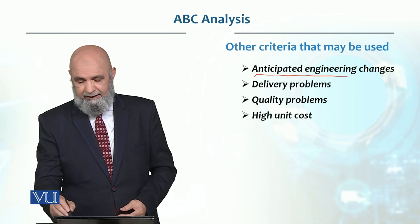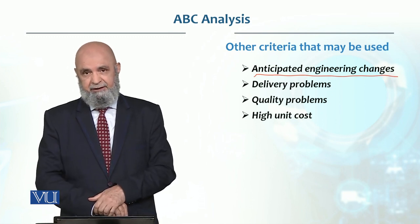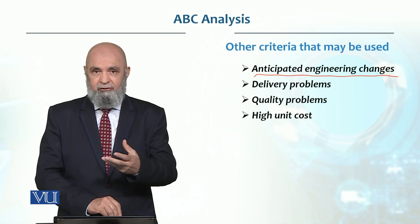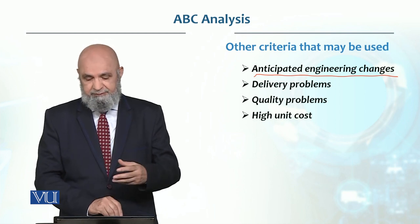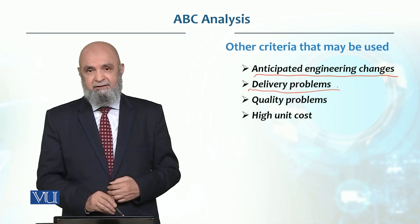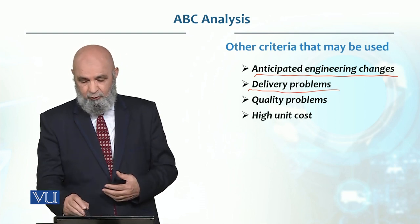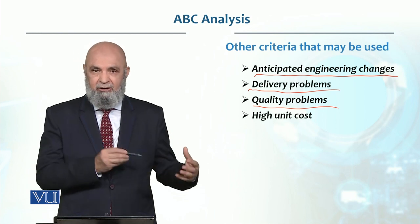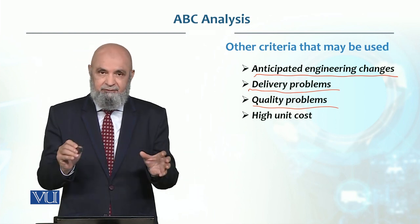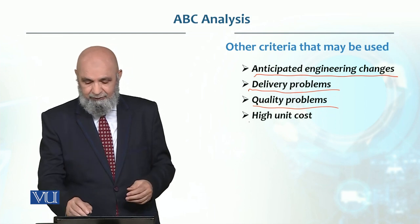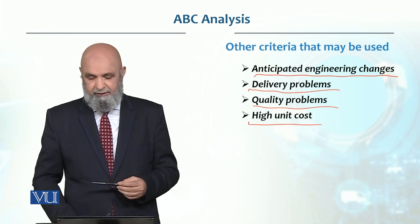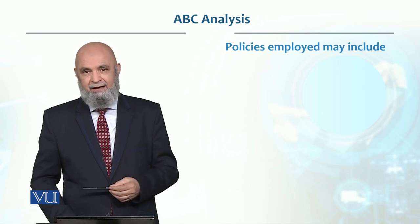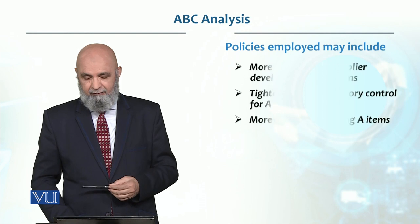Other criteria can also be used for ABC classification, such as anticipated engineering changes — items with many changes should not have large inventory. Delivery problems, quality problems, and high unit cost can also serve as criteria to determine which ABC policies should be employed.